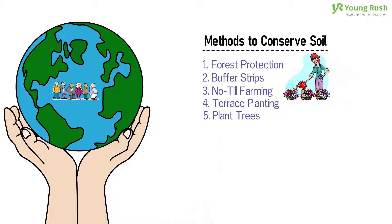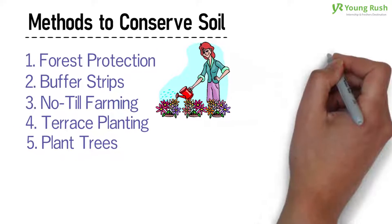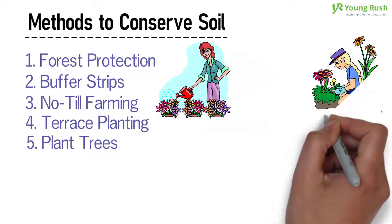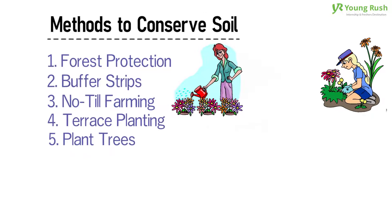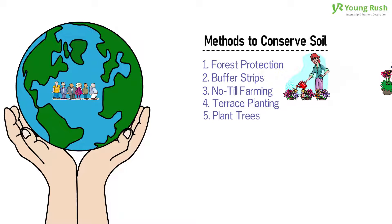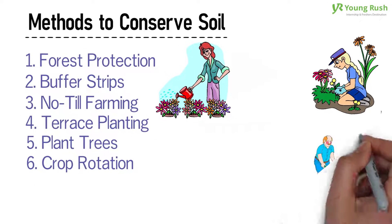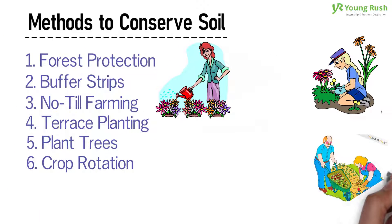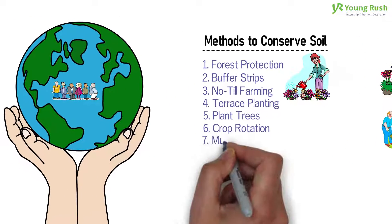5. Plant trees to secure topsoil. Sow grass and plant shrubs and other greenery in bare spots in your yard or garden. The foliage will absorb excess water and protect the topsoil from the impact of rain, heavy wind, and foot traffic. 6. Crop Rotation. Crop rotation is accomplished by planting and growing a series of different crops in the same soil. This prevents the overgrowth of pathogens and improves fertility of the soil.